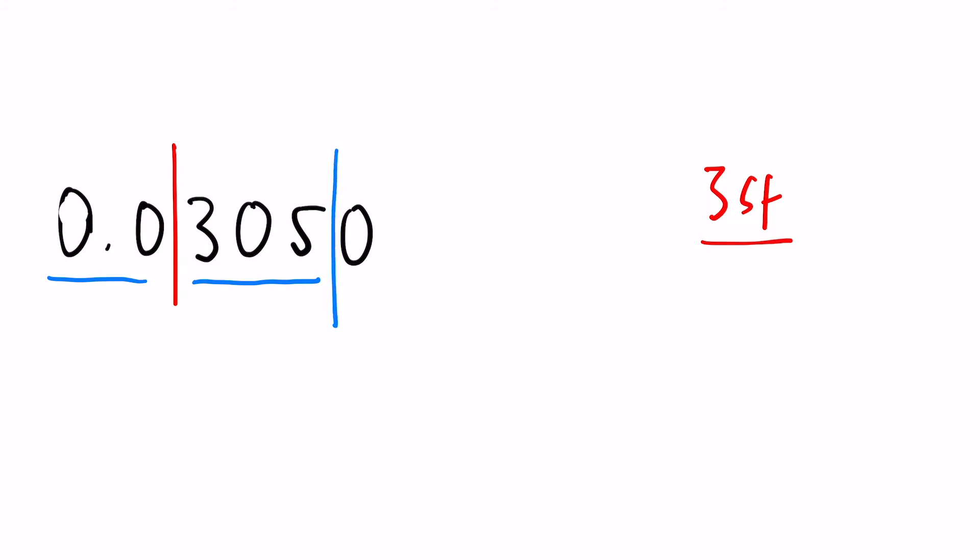So for three significant figures we identify those three: three, zero, and five. We draw that line in, zero is obviously not going to change anything, so that number is going to become 0.0305. So just to clarify, the zeros after the first significant figure count as significant when the numbers are less than one.